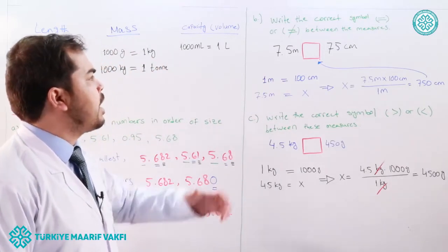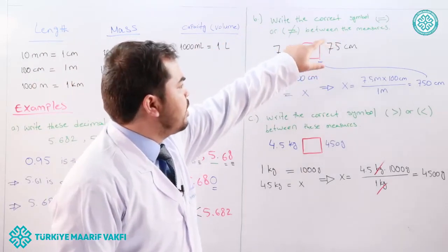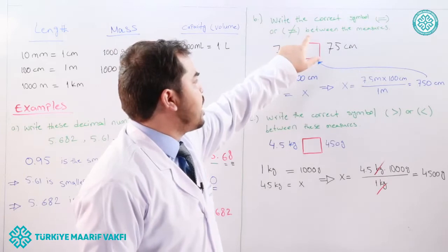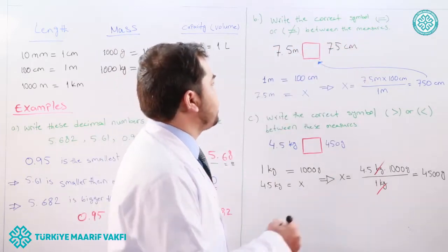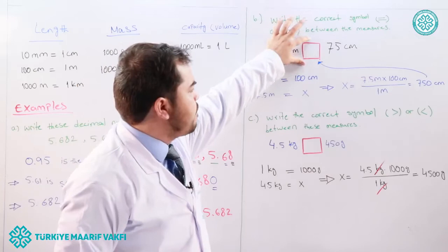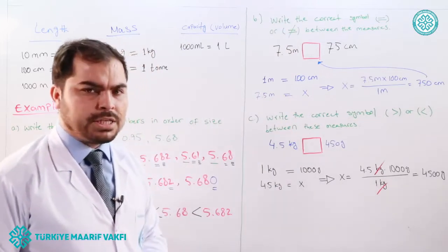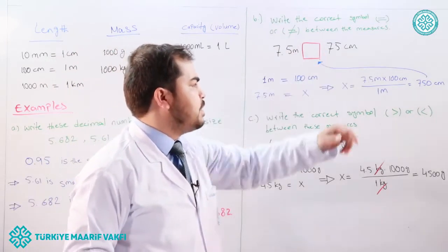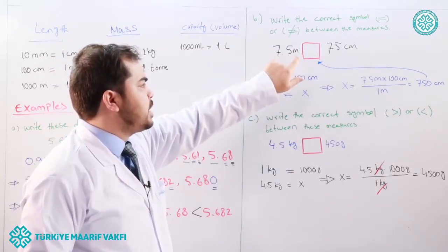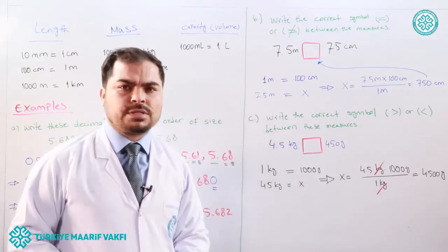The next problem asks us to write the correct symbol — equal or unequal — between two measures. We have 7.5 meters and 75 centimeters. To compare them, we need to convert both to the same unit.